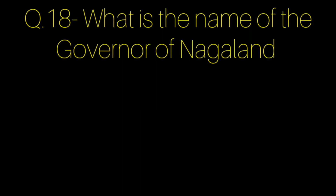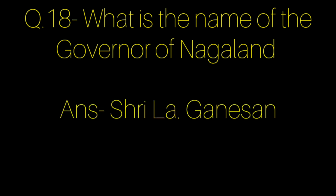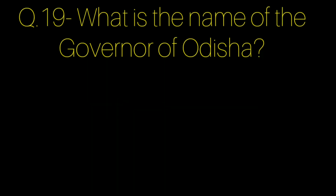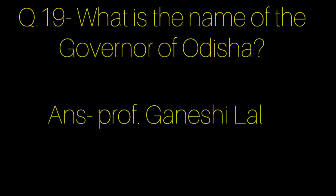Question number 18: What is the name of the governor of Nagaland? Answer: Shri L.A. Ganesan. Question number 19: What is the name of the governor of Odisha? Answer: Professor Ganeshi Lal.